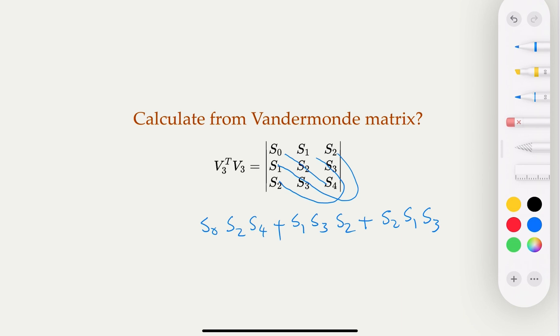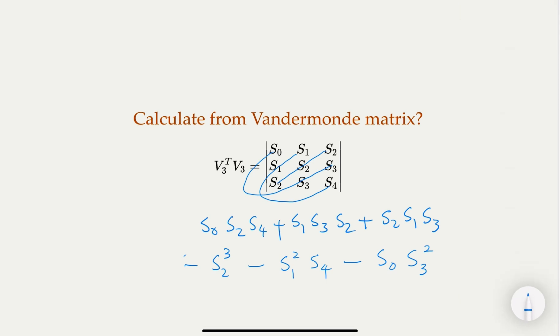And then the other direction would be the negative terms. So this is negative terms. Negative S_2 to the third power, and then minus S_1 squared times S_4, and then minus S_0 times S_3 squared.